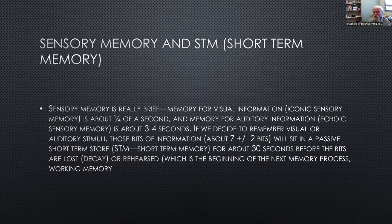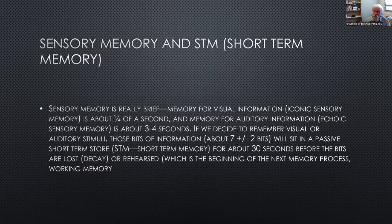We'll start with sensory memory, the initial passive storage system. A man named Miller in the 1950s did several experiments showing that humans have sensory memory. Sensory memory is really brief. When we look at the world we pick up visual information — that's called iconic sensory memory, from the word 'icon' for what we see — and that lasts for about a quarter of a second.